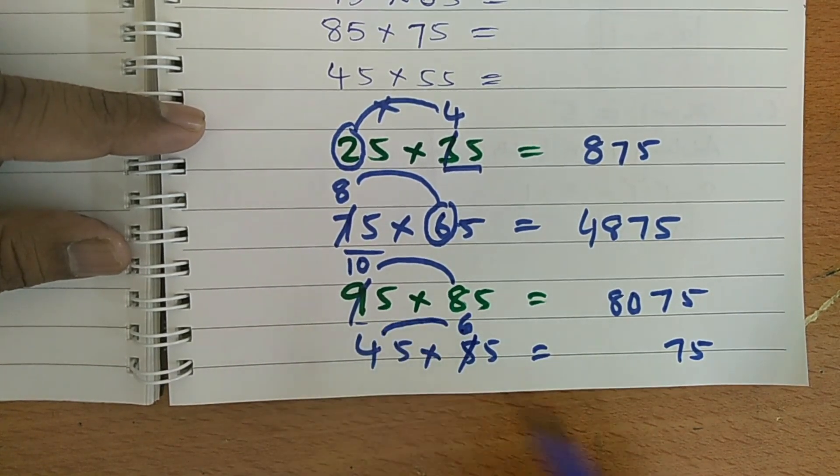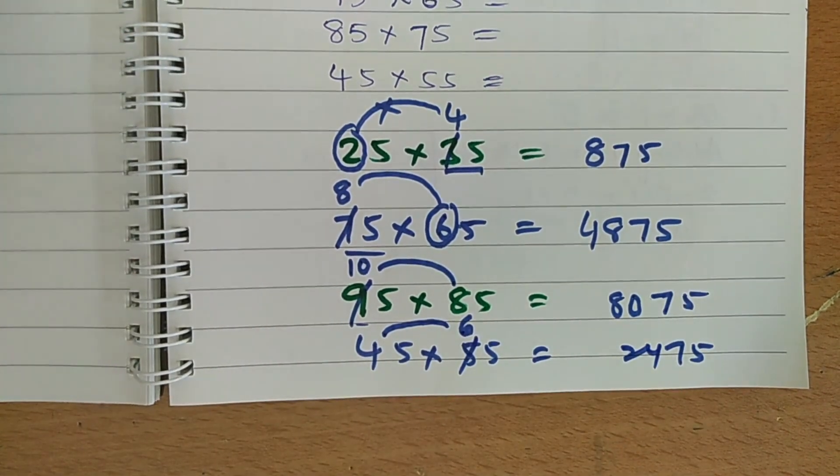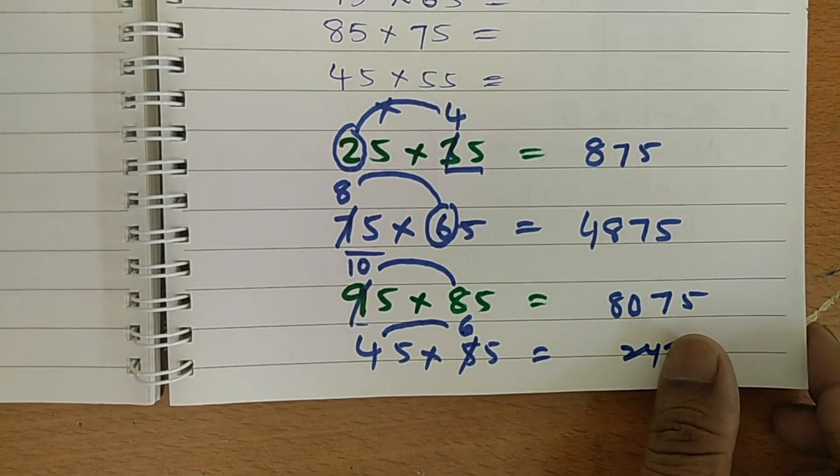So, 6 into 4, I should multiply, 6 into 4, 6 into 4 is 24. So, 2475 directly, like this quickly, you can calculate and say the answer.